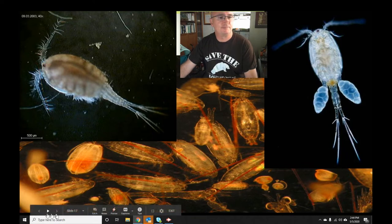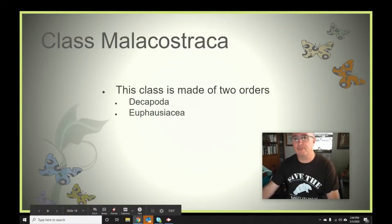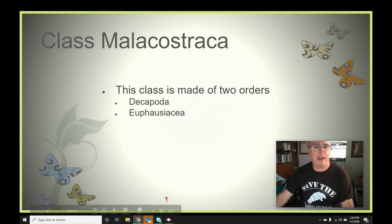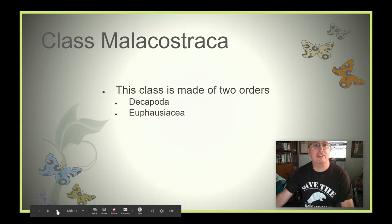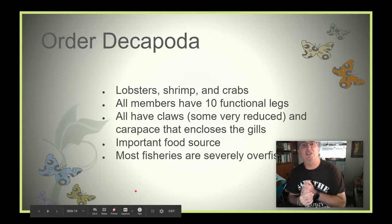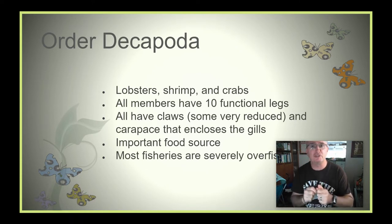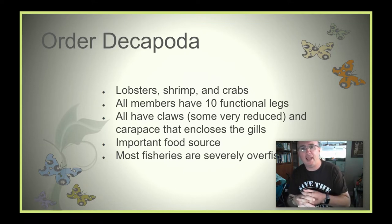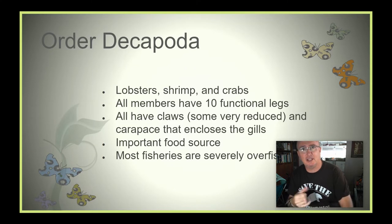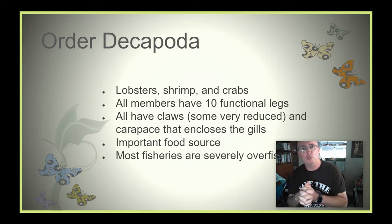Malacostraca decapods — these are the crabs, shrimp, lobsters, and crayfish. All members have 10 functional legs, typically in five pairs. They typically have claws of some sort — some very reduced, others very large like a Maine lobster. They have a carapace, the hard exoskeleton covering their body. They're also a very important food source for us, but like anything we enjoy eating from the ocean, we've over-exploited and overfished many of these fisheries.